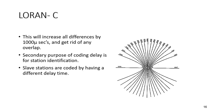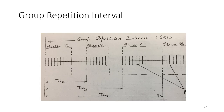Each chain comprises a master and a number of slave stations. Chains are identified by their group repetition interval — the time between the start of one master station's group of pulses and the next. The GRI is expressed in tens of microseconds and is unique to a particular chain; in fact the chain is identified by its GRI. For example, 9990 corresponds to a group repetition interval of 99,000 microseconds.